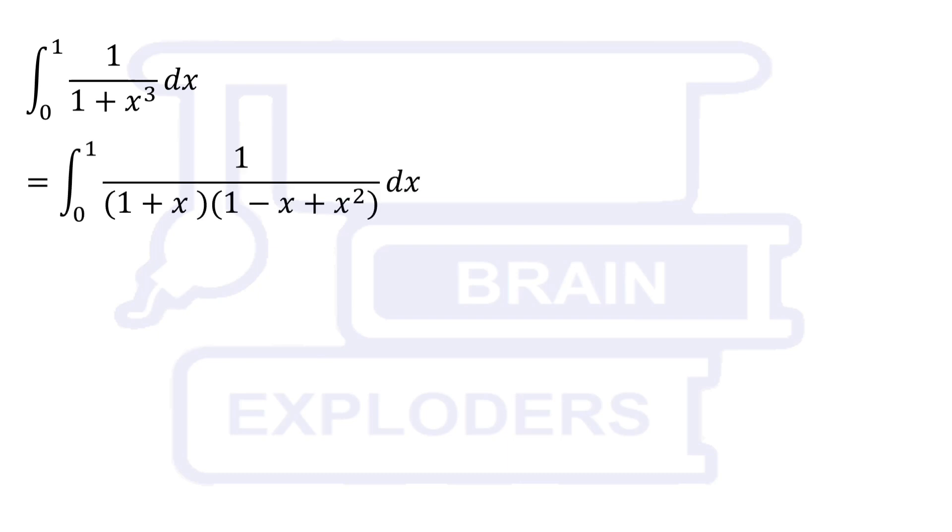1 plus x cubed can be written as (1 plus x) times (1 minus x plus x squared), and hence we can do it with the help of partial fractions.